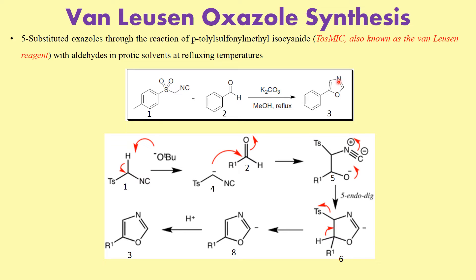Looking at the mechanism of the reaction — it is fairly straightforward. Compound one is the TosMIC reagent. We use a base such as potassium carbonate or potassium tert-butoxide. The particular hydrogen on the reagent is quite acidic because the sulfonyl group and the nitrogen are both attached, withdrawing electron density. The base abstracts this proton, resulting in the generation of a carbanion, which is stabilized by the sulfonyl group through conjugation.